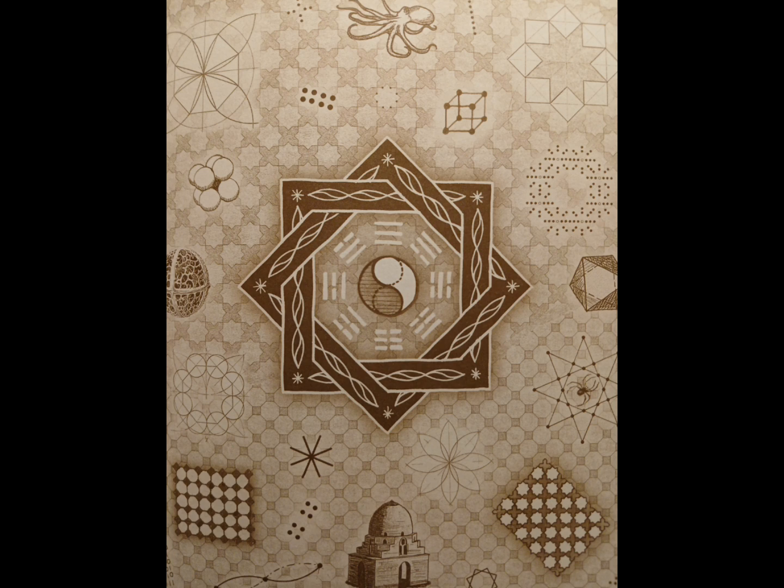Depicted in the centre of the picture is the former heaven sequence, said to represent the ideal pattern of transformations in the cosmos. Note how each trigram is the complement of its opposite.